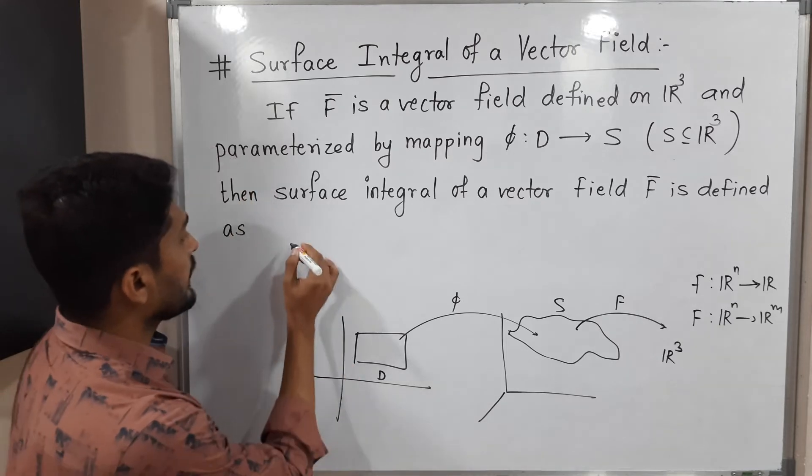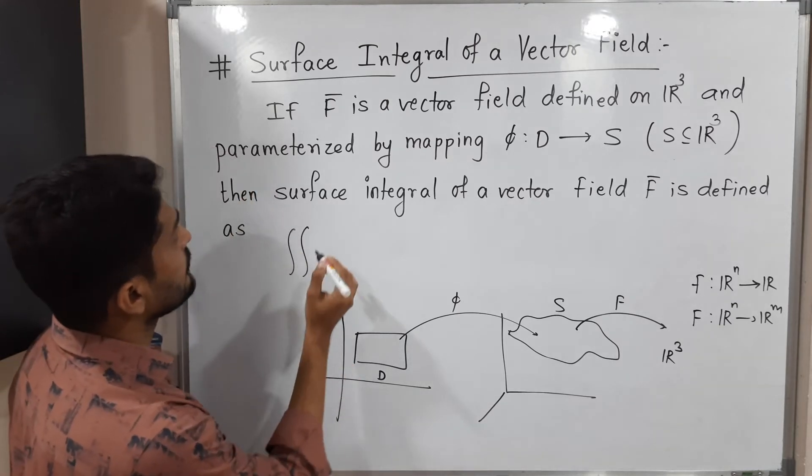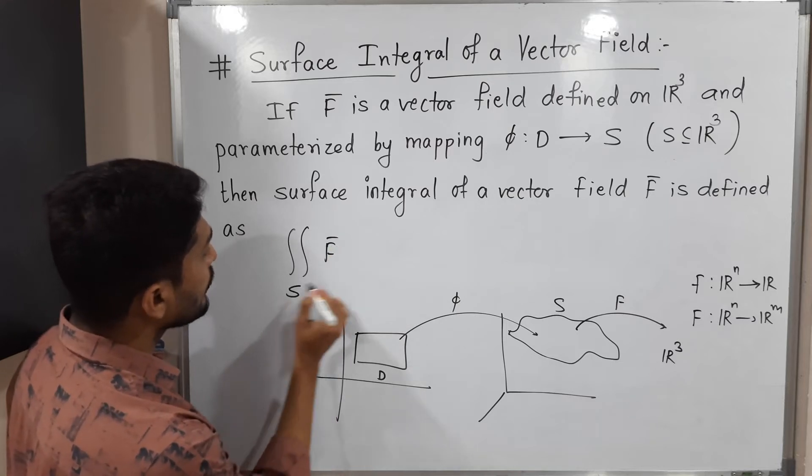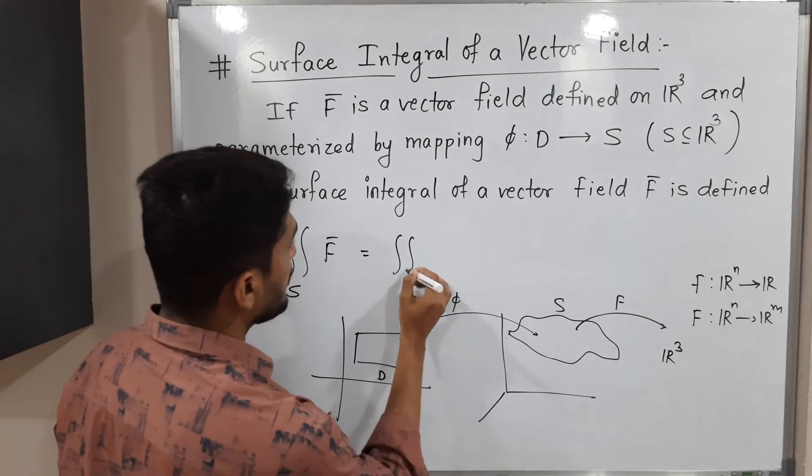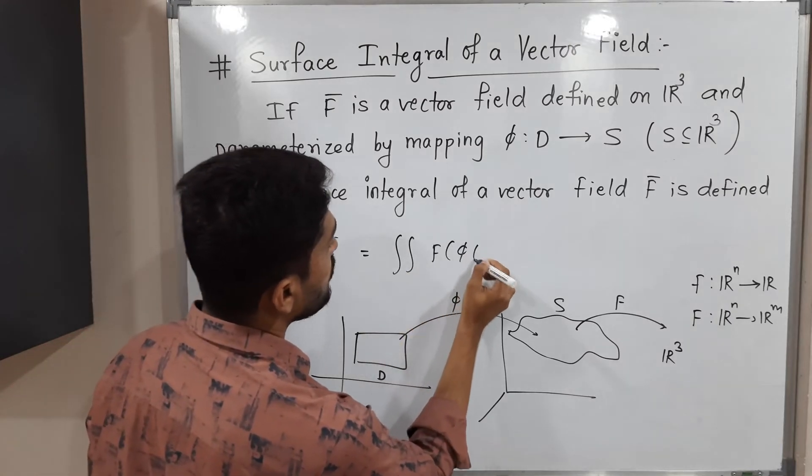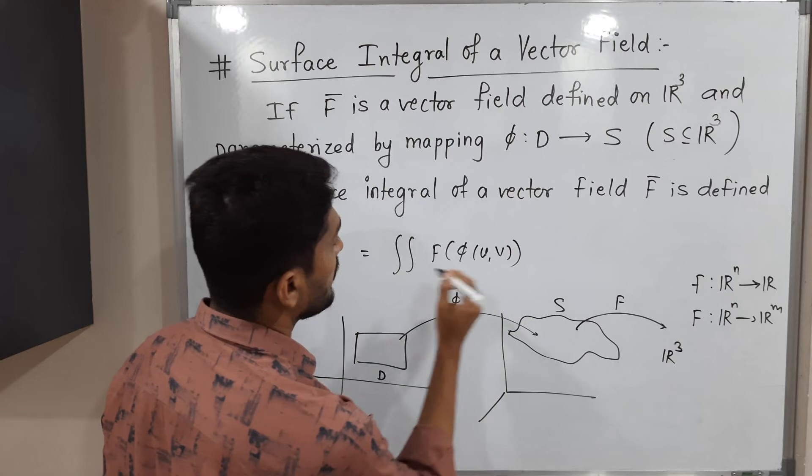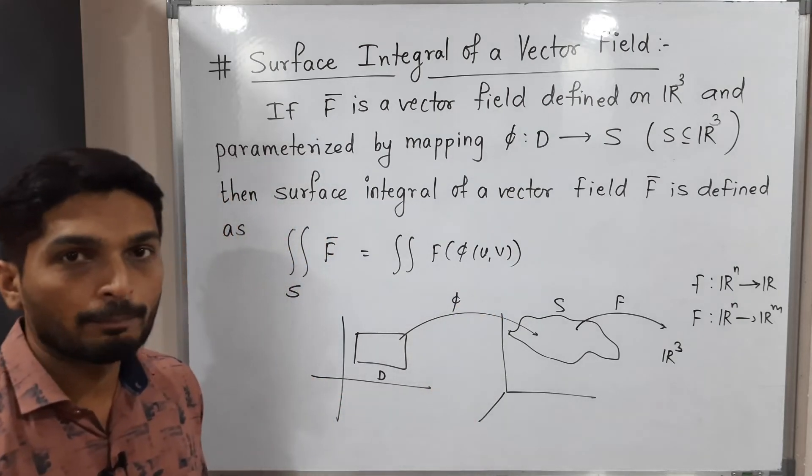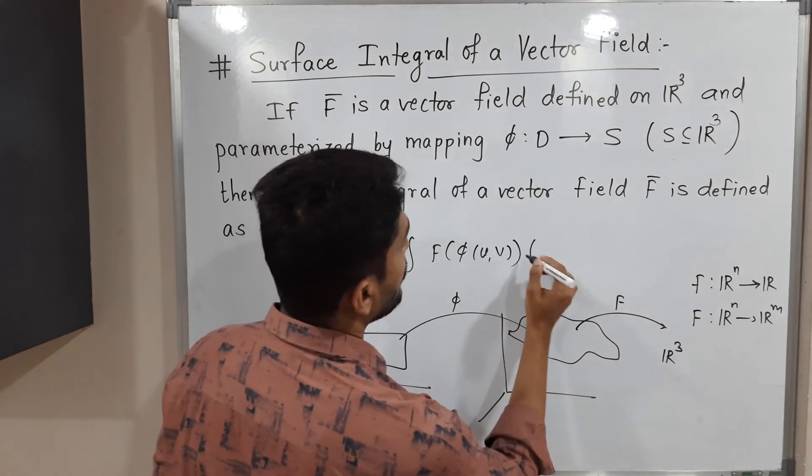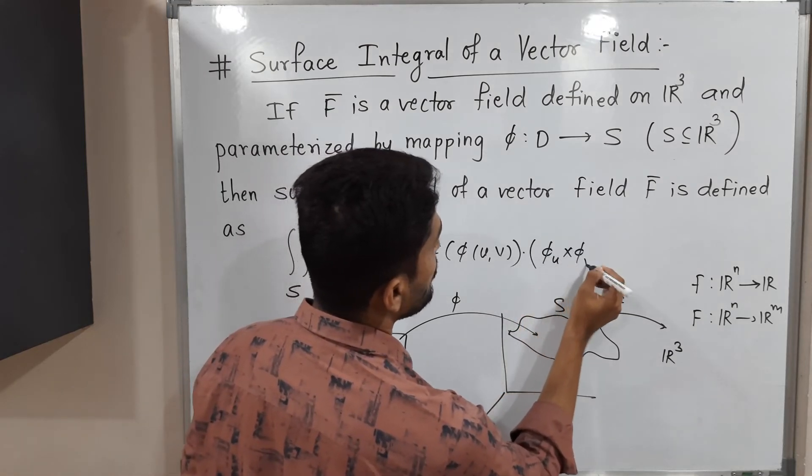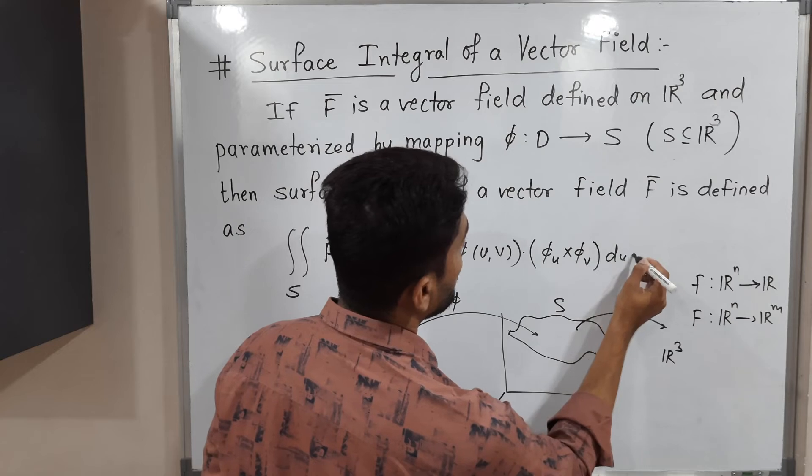Then we can find the surface integral of F bar over S is equal to: the definition is double integration F of phi of u, v. That means we take a composition of F and phi. And dot product phi u cross phi v du, dv.